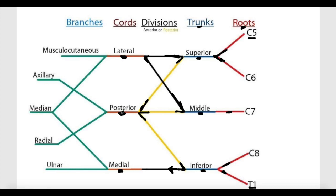The last part of the brachial plexus is the branches, which mainly supply structures of the upper limb. The first branch is the musculocutaneous nerve, which innervates muscles of the anterior compartment of the arm — for example, the biceps, coracobrachialis, and brachialis muscles. These three muscles are found in the anterior compartment of the arm, and the musculocutaneous nerve innervates them.